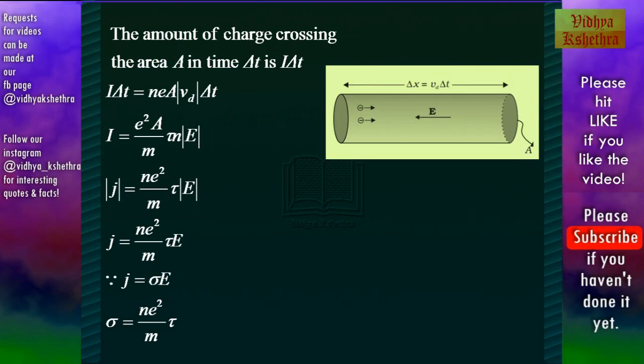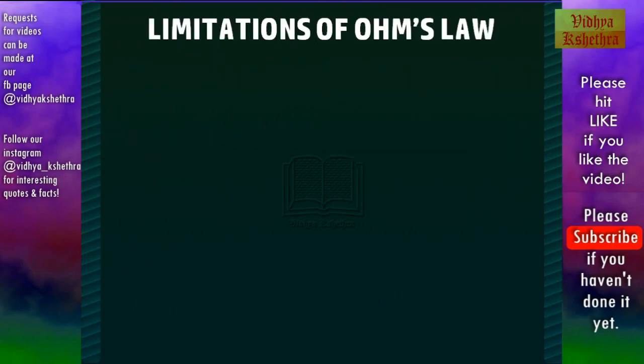Hence, |j| = ne²/mτ × |E|. Since j and E are in the same direction, we can write j = ne²/mτ E. Now since j = σE that we have already proven, we can write σ, which is the conductivity, is equal to ne²/mτ.